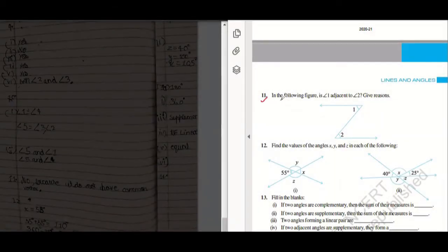In question number 11, in the following figure, angle 1 is adjacent to angle 2. The answer is no because they do not have a common vertex. Very good.